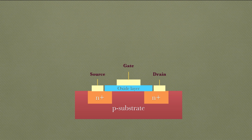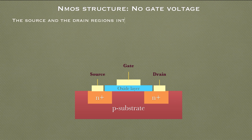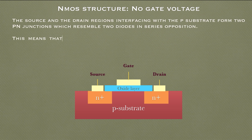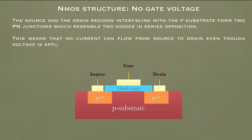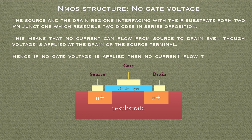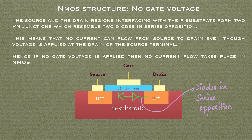When no gate voltage is applied to the NMOS structure, the source and drain regions interfacing with the P-type substrate form two PN junctions, which resemble two diodes in series opposition. This means no current can flow from the source to the drain even if voltage is applied at the drain or source terminal. Hence, no current flow is possible in either direction.